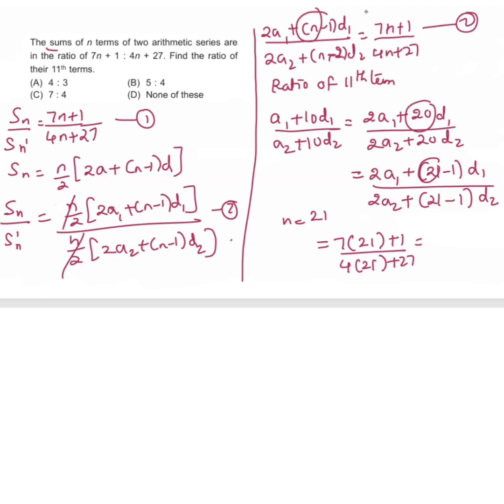7 into 21 will be 147 plus 1 divided by 84 plus 27. That will be 148 divided by 111. This simplifies in the 37 table to give 4 by 3. So the answer is 4 by 3, that is your option A.